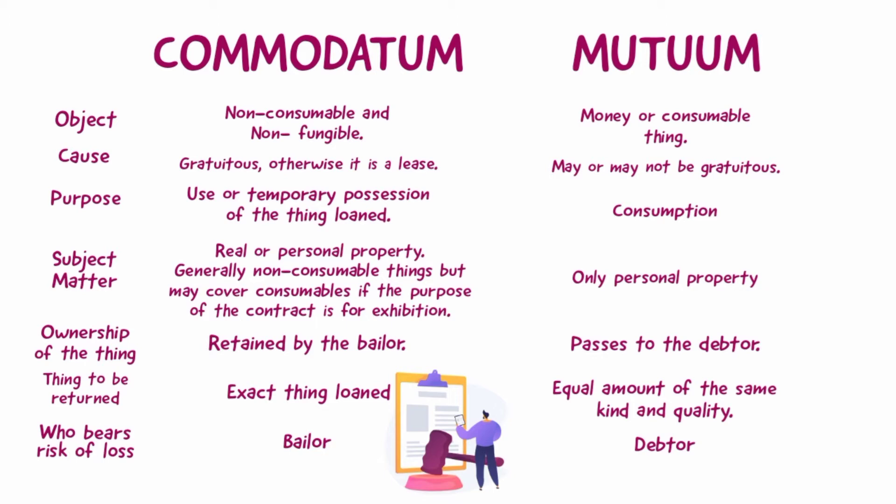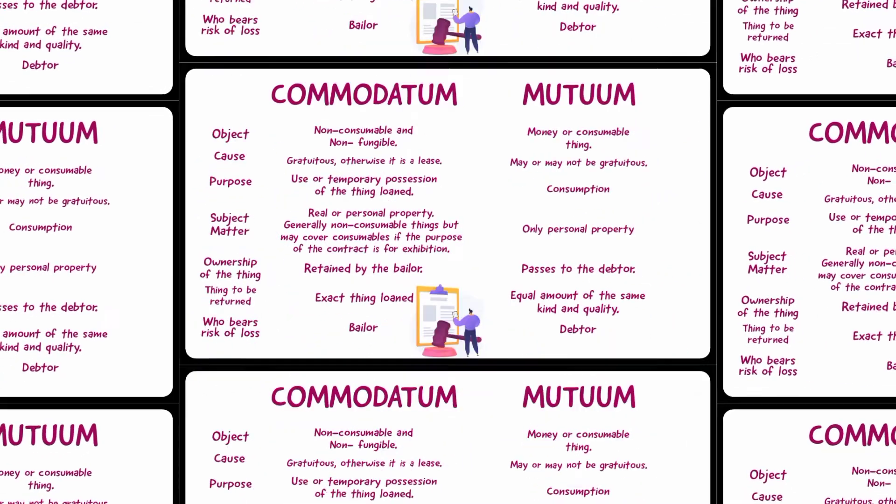Sixth, the thing to be returned in commodatum is the exact thing loaned, while in mutuum it is the equal amount of the same kind and quality. Seventh, in commodatum the bailor bears the risk of loss, while in mutuum the debtor bears the loss.